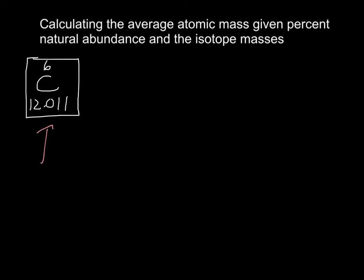Now that's a weighted average of the two major isotopes in carbon. And so we're going to first learn how to calculate this number given the percent natural abundance of the two isotopes and their masses.